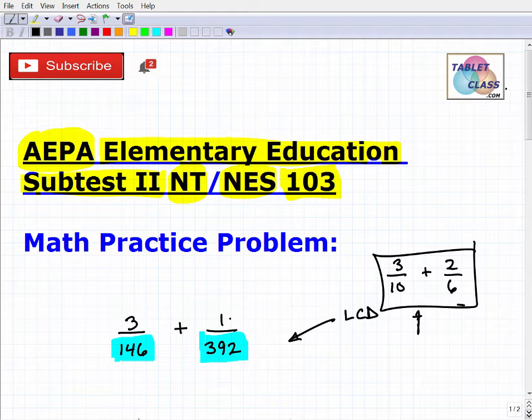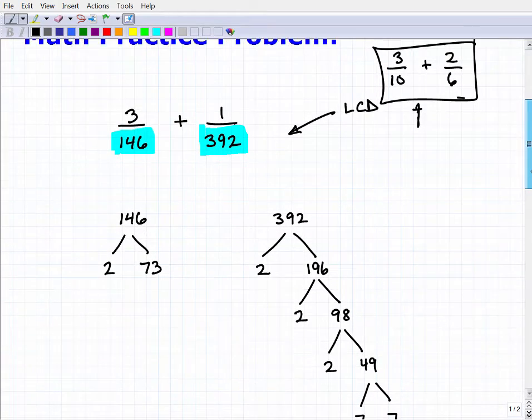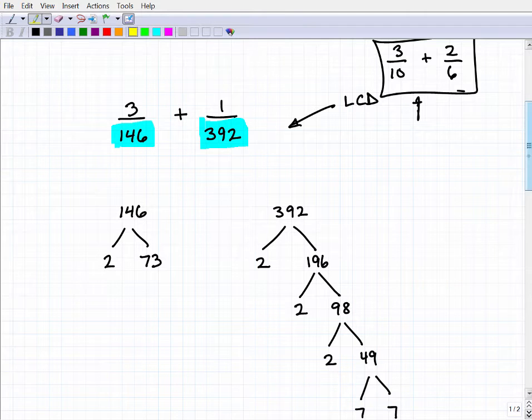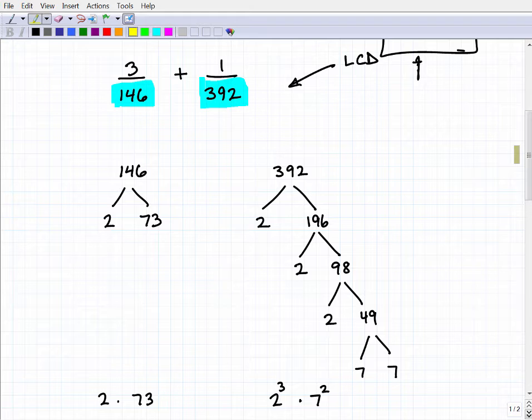Let's go ahead and go through this here. There's a couple different approaches, but you're going to be doing the same thing. What you want to do is prime factor each of these numbers. We have 146 as one denominator and 392 as the other. A good way of doing that is to create a factor tree. You want to know some divisibility rules, especially if you're going to be teaching elementary education. One divisibility rule is: if the sum of the digits is divisible by 3, then the whole number is divisible by 3. For 146, the sum is 1 + 4 + 6, which equals 11, so this isn't divisible by 3.